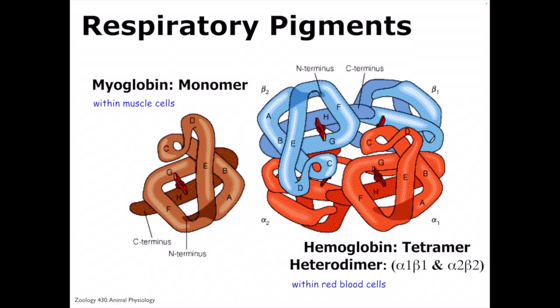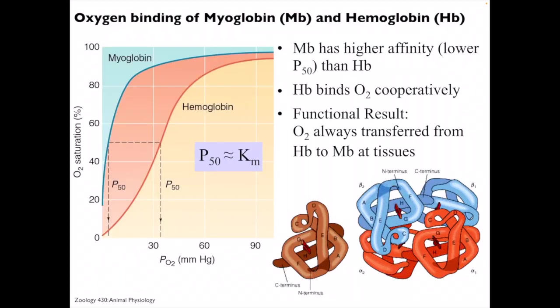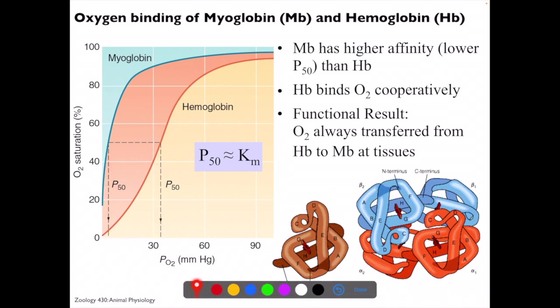We not only have hemoglobin as a respiratory pigment — we also have myoglobin, which is in our muscle cells. Unlike hemoglobin, myoglobin is a monomer, so there is cooperative binding in hemoglobin but not in myoglobin. Myoglobin has a higher affinity for oxygen, as you can see from the P50 values. You need very little oxygen to have lots of myoglobin bound, which means oxygen is always going to be transferred from hemoglobin to myoglobin — exactly what you want to keep your muscles getting oxygen under any situation.